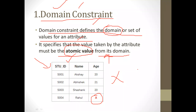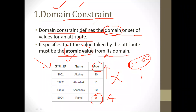For example, the age attribute may have a domain between 0 to 100. If a value outside that range is entered, it is not acceptable for the age attribute. That is called a domain constraint violation. Here in the table, the domain constraint is violated because the value is outside the acceptable domain.